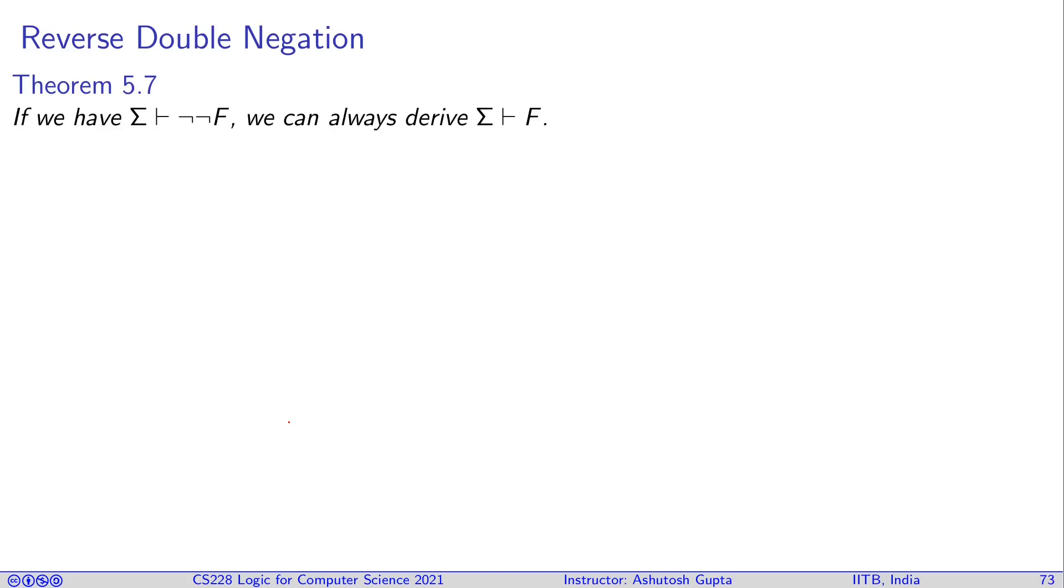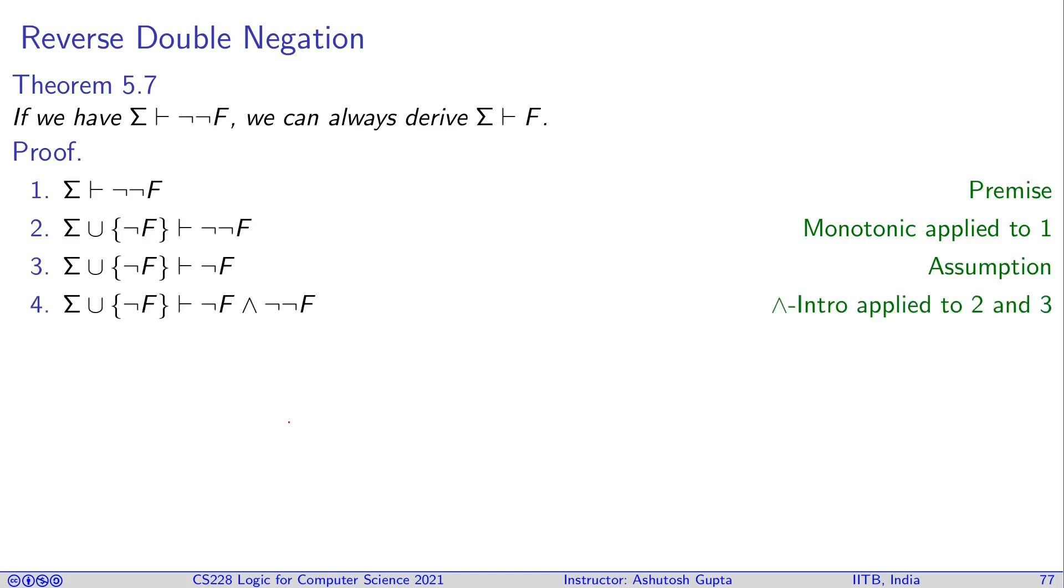So formally it says that if you can prove not not F then you can derive F. So how do we do that? Let's suppose you have a premise, this not not F. You can apply monotonicity and just put not F up there. Then see what you can do. By assumption I can derive not F. And not F and not not F by intro gives us convention. So now we have not F and double not F. Now we have contradiction here. Therefore, once you derive contradiction, you can derive anything. Therefore, you can see I have derived F.